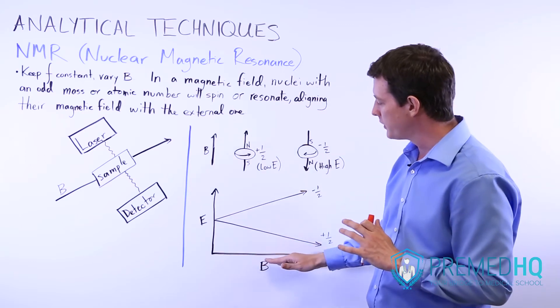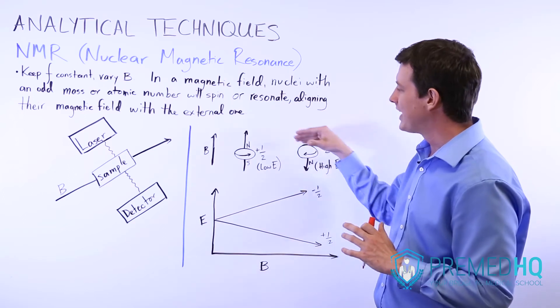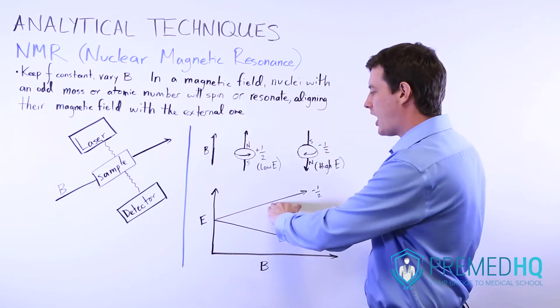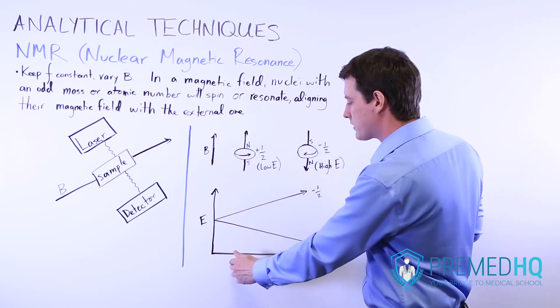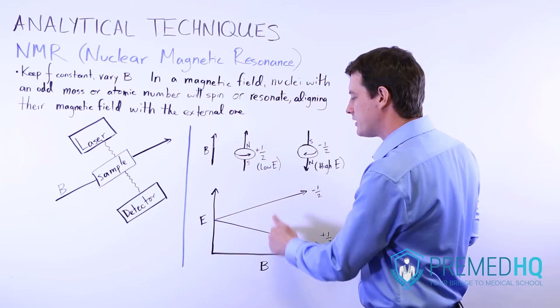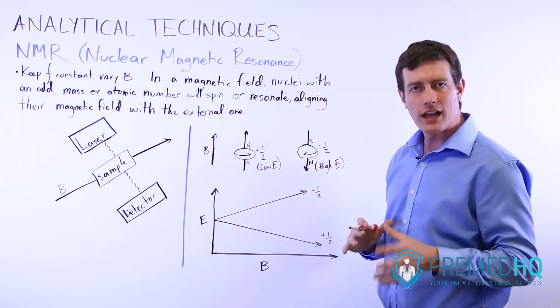And so what we have is for any magnetic field—notice that as the magnetic field increases, the minus one half or the spin anti to the external field is much higher energy, and as you increase the strength of this magnetic field it's going to increase the energy difference between one direction of spin and the other.